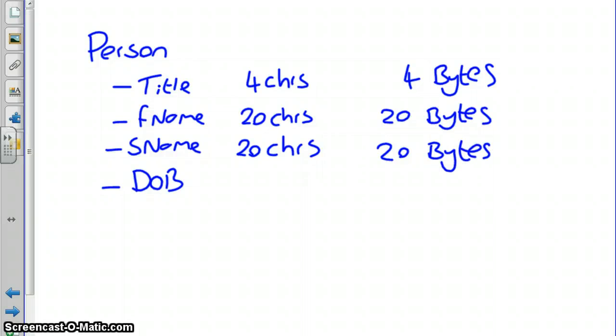A date of birth, if we write it in the format of the 3rd of the 1st, 1995, we've got 1, 2, 3, 4, 5, 6, 7, 8, 9, we've got 10 characters, so 10 bytes.